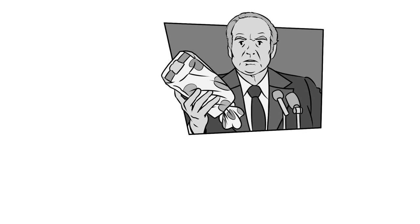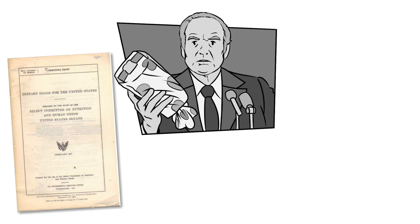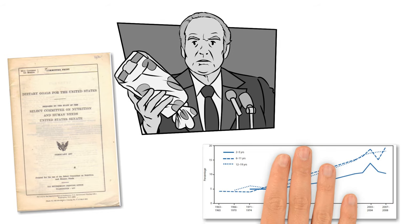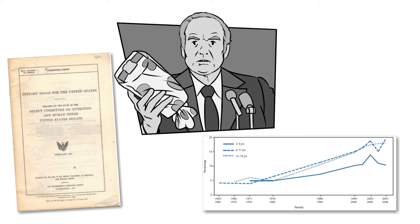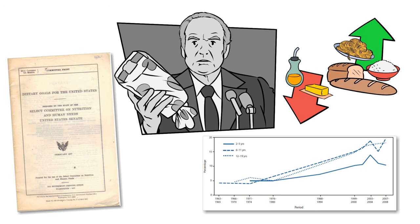Three years later, the committee published its Dietary Goals for the United States. At the time, obesity rates hovered around 10% among adults and 5% for children. McGovern hoped his report would help reduce these figures by encouraging low-fat, high-carbohydrate diets.